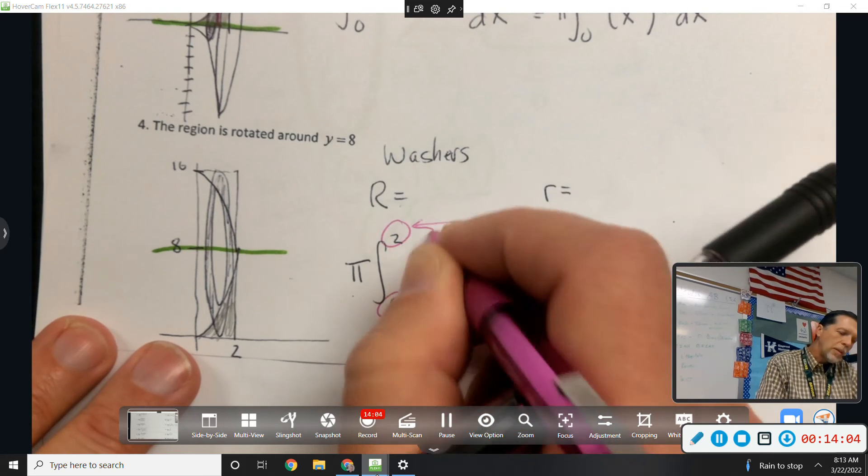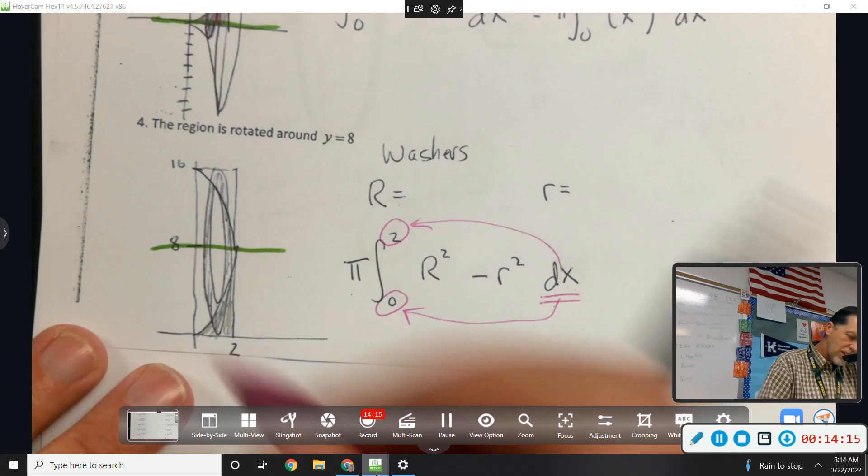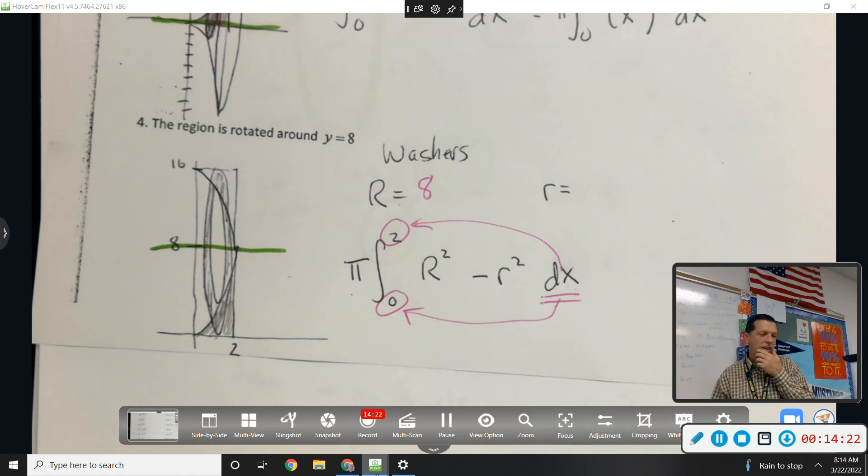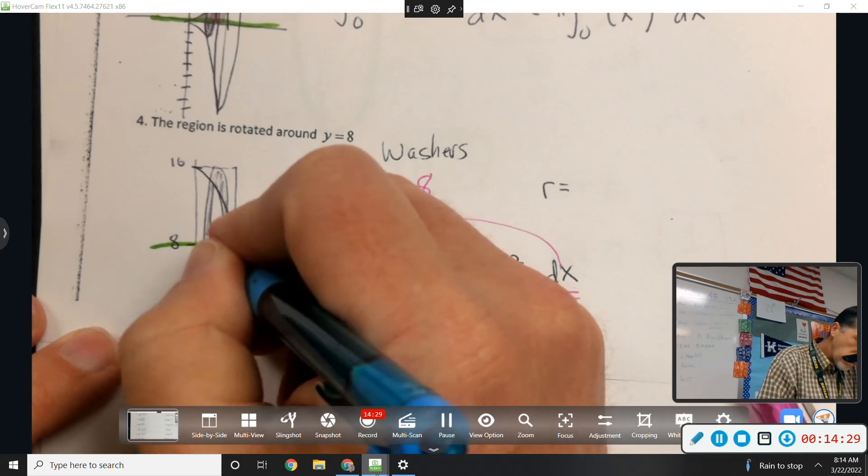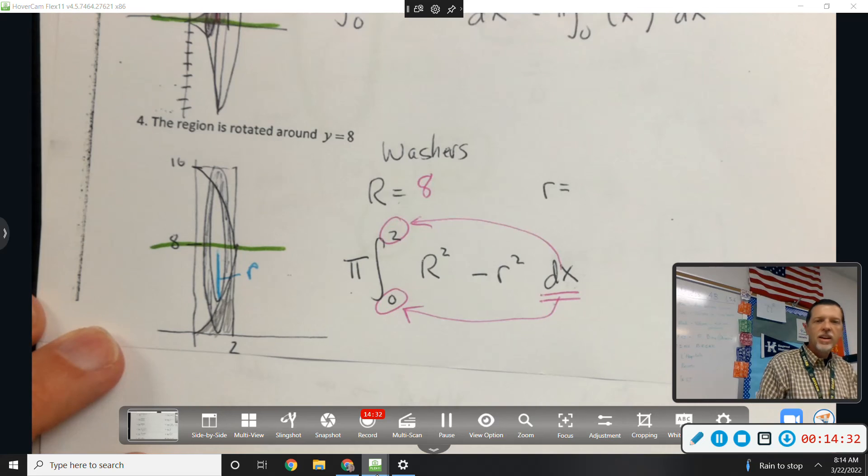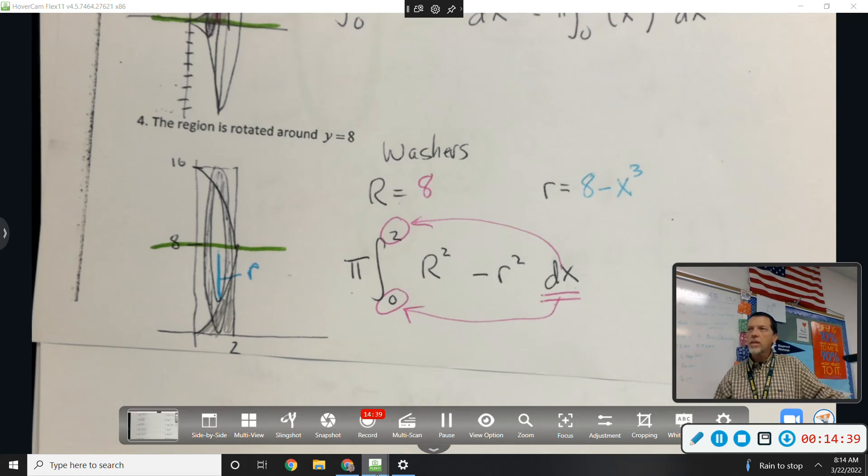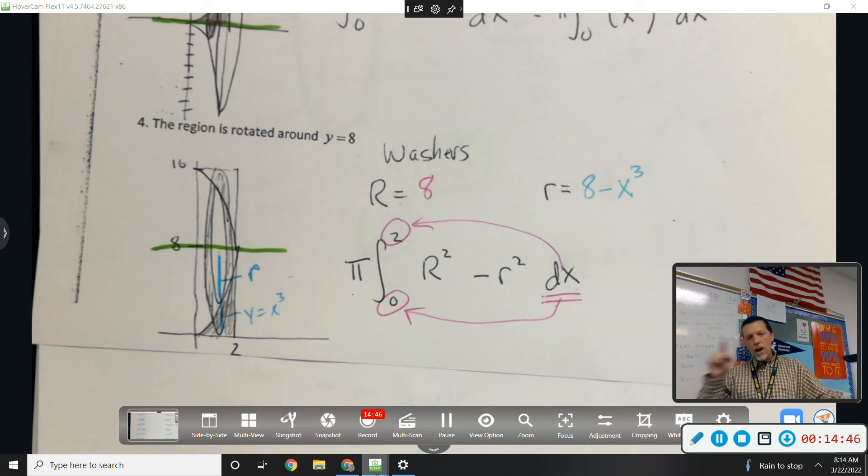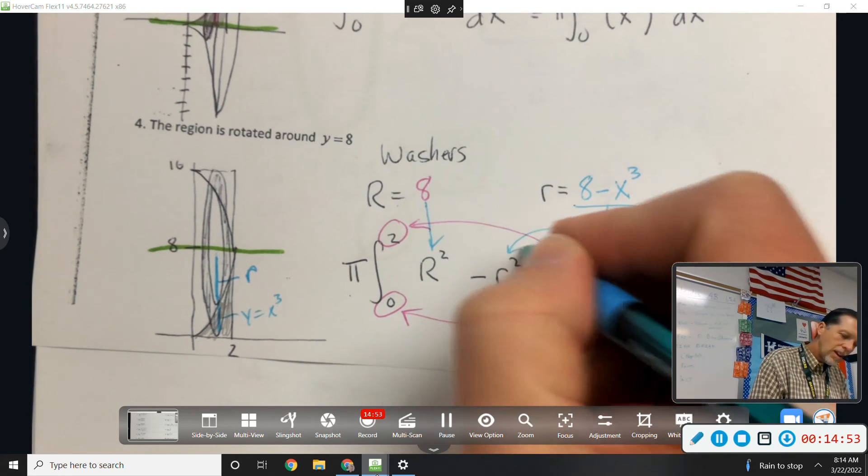So I wouldn't say use the opposite. If it's dx, you're using x numbers for the limits. Yeah. Is that what you're trying to ask? What's big R for this one? It's 8. Good. It's a constant 8. Like the outside of this thing is a constant, like a cylinder on the outside. The little R is a little bit trickier. What's little R? Good. 8 minus x cubed. Not cube root, because it's that y height, which is x cubed. If you were having to do it the other way, then you would have taken a square root. So now this is pretty much ready to go in the calculator.